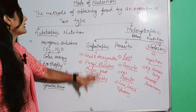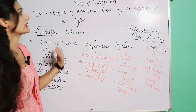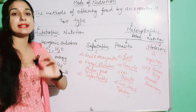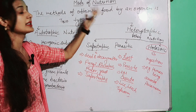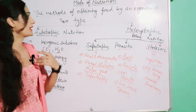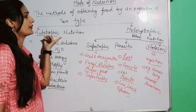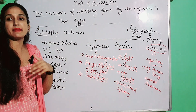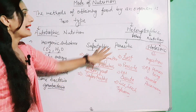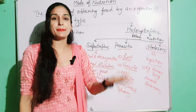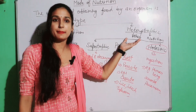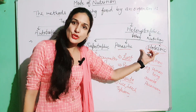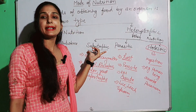What did we do today? We discussed the mode of nutrition — the ways in which living organisms obtain food. There are two types: autotrophic and heterotrophic. Autotrophic organisms prepare food themselves, while heterotrophic organisms depend on others. Heterotrophic nutrition is further divided into three categories: saprotrophic, parasitic, and holozoic.